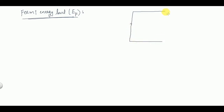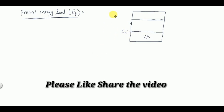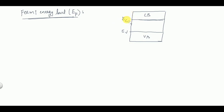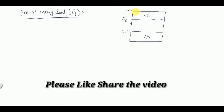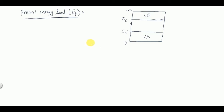In a semiconductor there are different types of energy levels. E_V represents the highest energy level in the valence band, and E_C represents the lowest energy level in the conduction band. There are infinite energy levels from zero to infinity in a semiconductor. The x-axis represents the length of the semiconductor, and this is the energy band diagram.